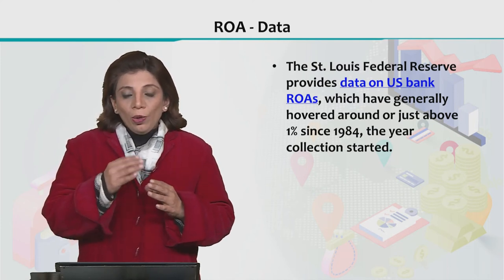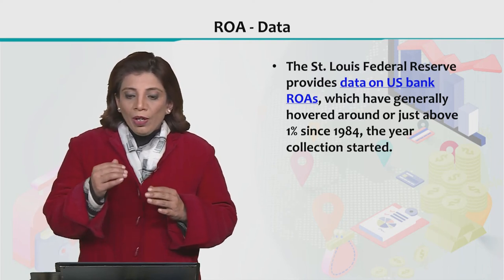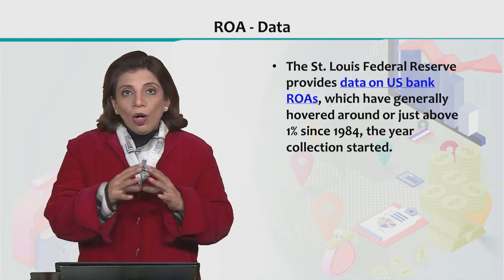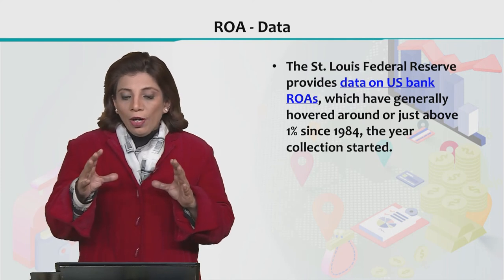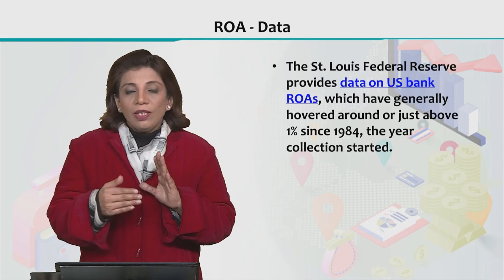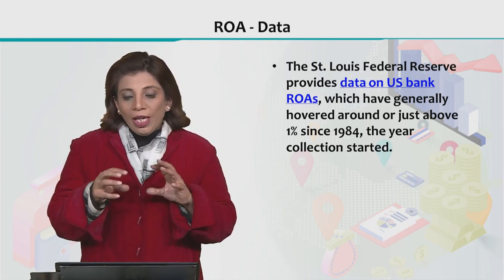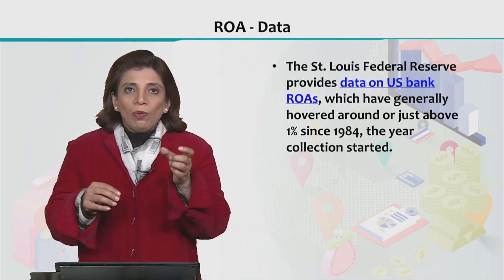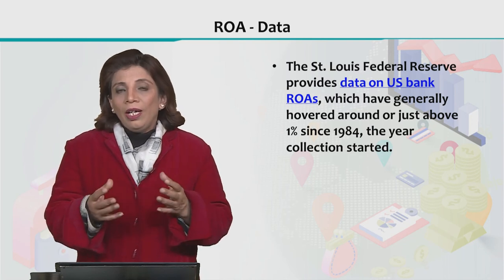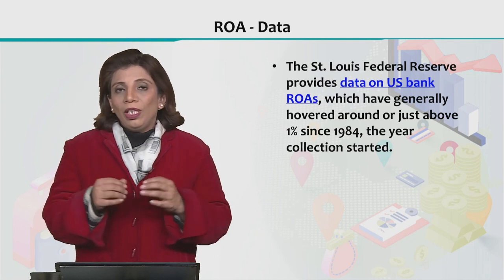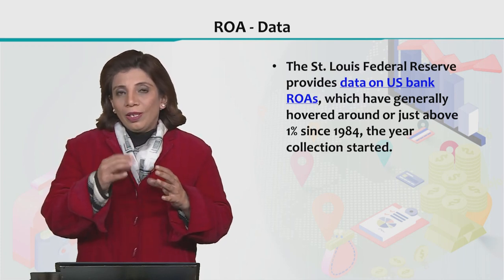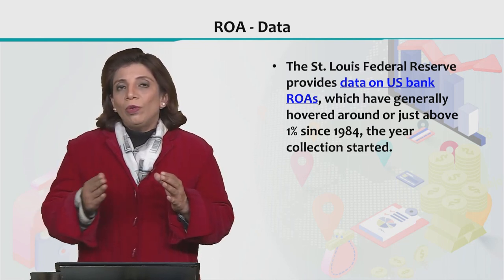Another important aspect about ROA is that in the US, there is the St. Louis Federal Reserve Bank, which provides the values of return on assets for all US banks. They maintain this dataset, and it is interesting to note that for all banks in the USA, as per the database maintained by the St. Louis Federal Reserve Bank, from 1984 onwards, the ROA values of all banks operating in the US are somewhat around 1%. Since banks are service-oriented organizations, their total asset value is not very large, so they sit around an ROA of 1%. This also illustrates that across industries, ROA values cannot be compared.